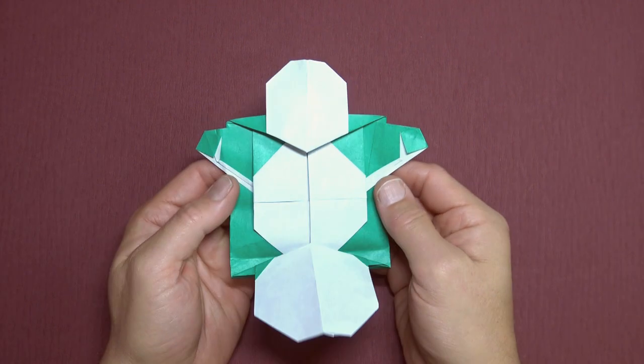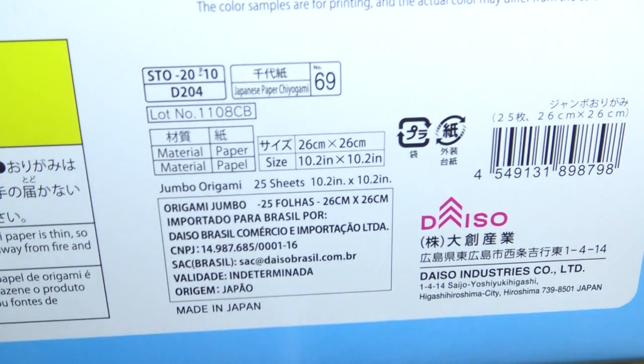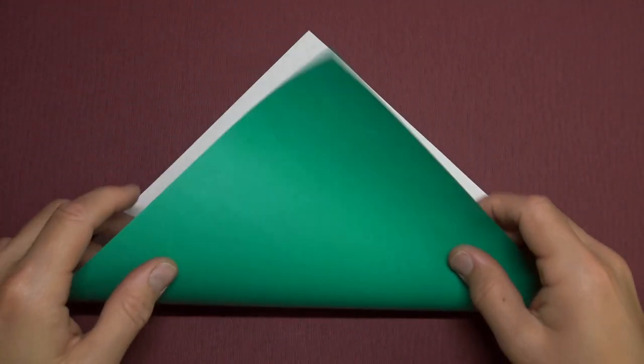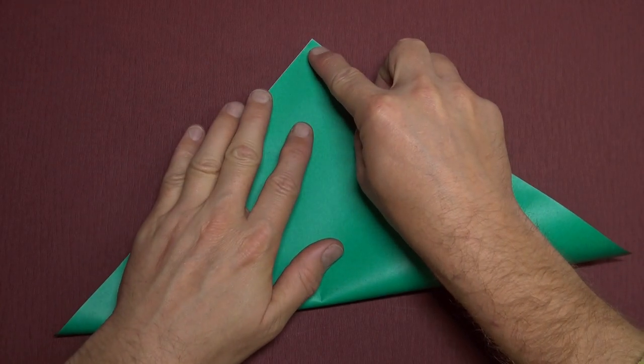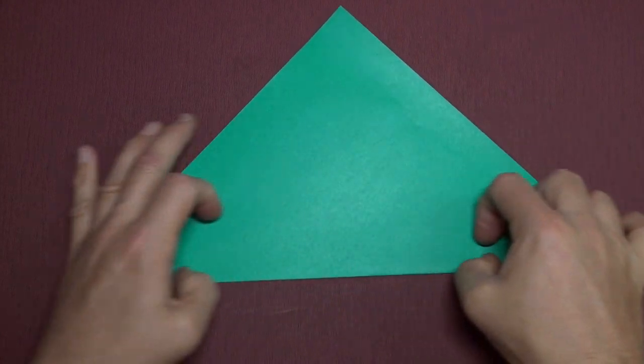All right, so for this pop-up snowman, I'm going to use a 10-inch square of kami. Begin white side up and fold diagonally in half. As always, make very precise folds and crease sharply.